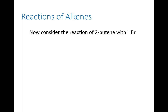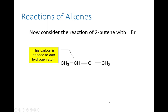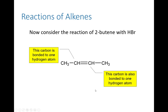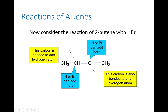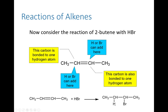Now let's consider 2-butene instead of propene. We look at the alkene — this carbon is bonded to one hydrogen, and this carbon is also bonded to one hydrogen. So Markovnikov's rule doesn't help us; the hydrogen could add to either side and the bromine to the other. You'll notice that regardless of which side you put the hydrogen on, you actually get the same product in this case. This product is 2-bromobutane.